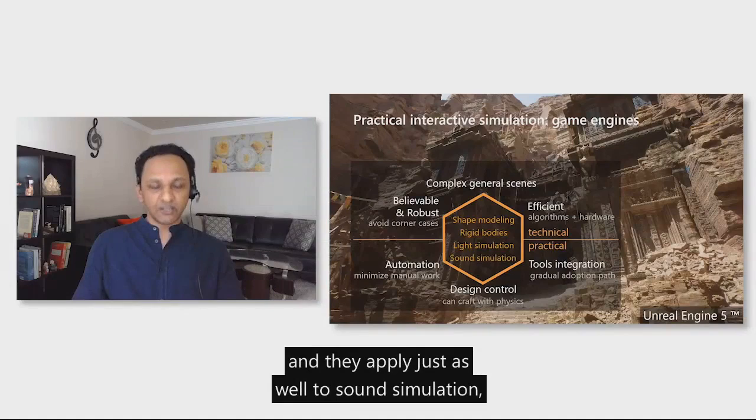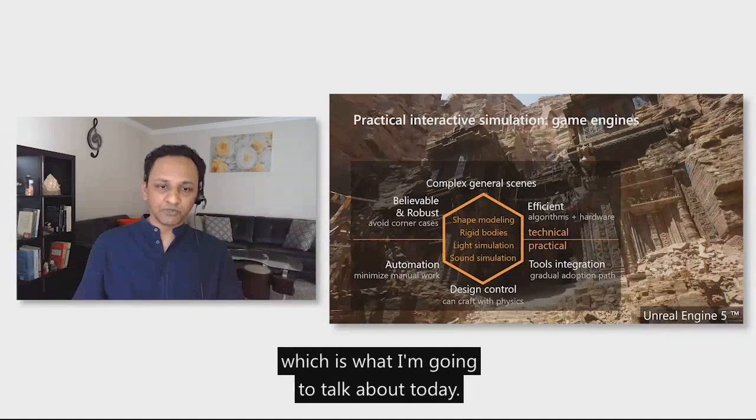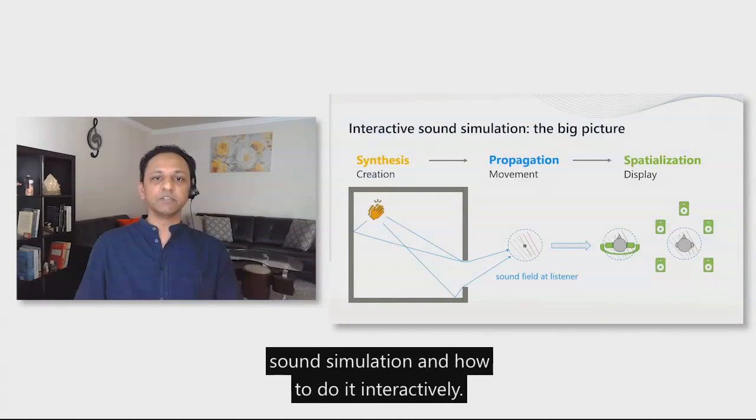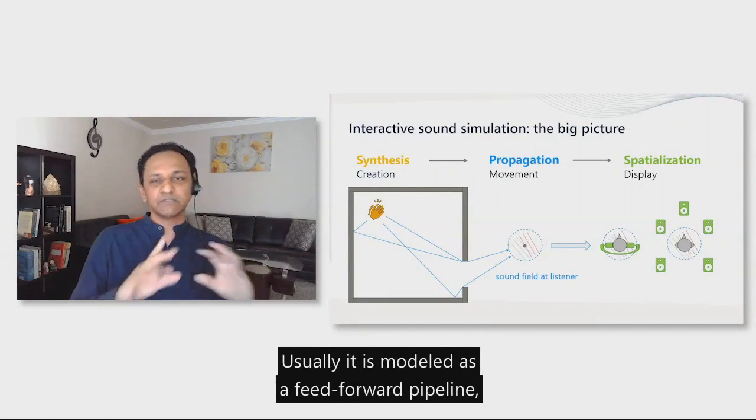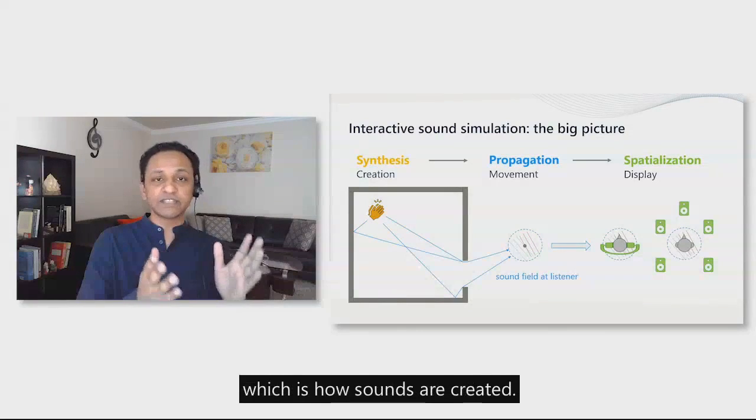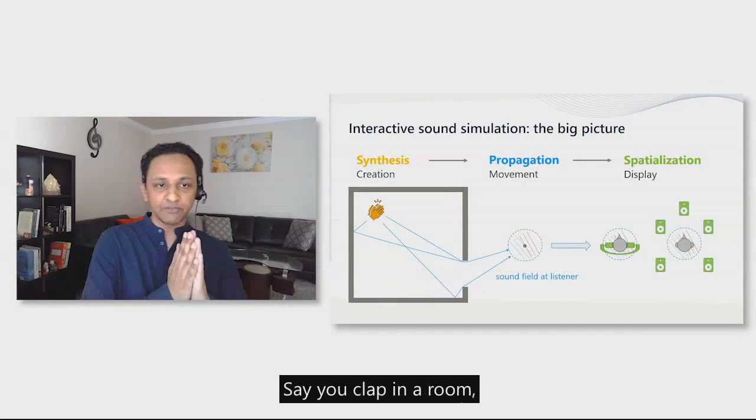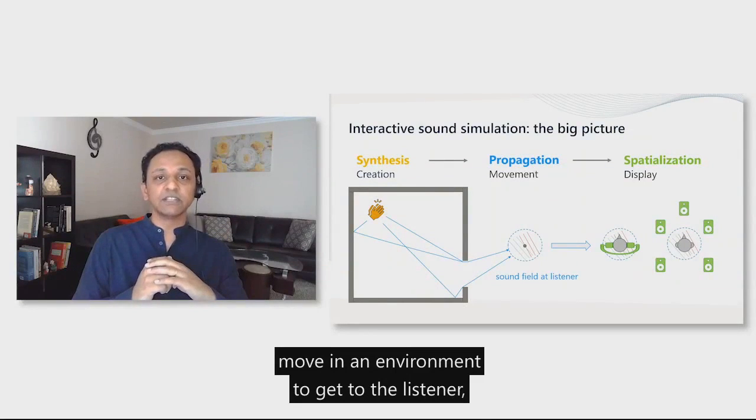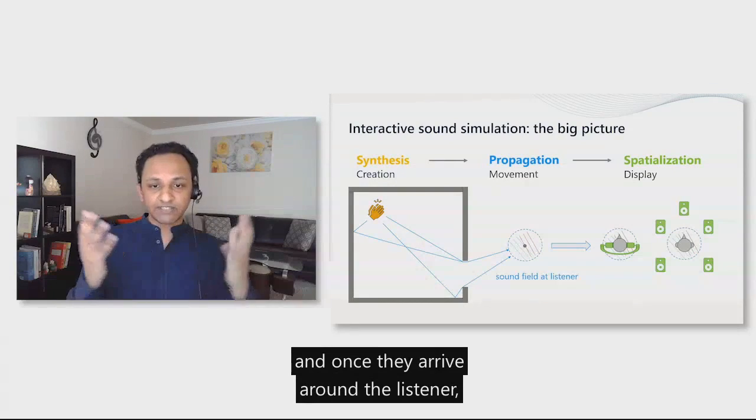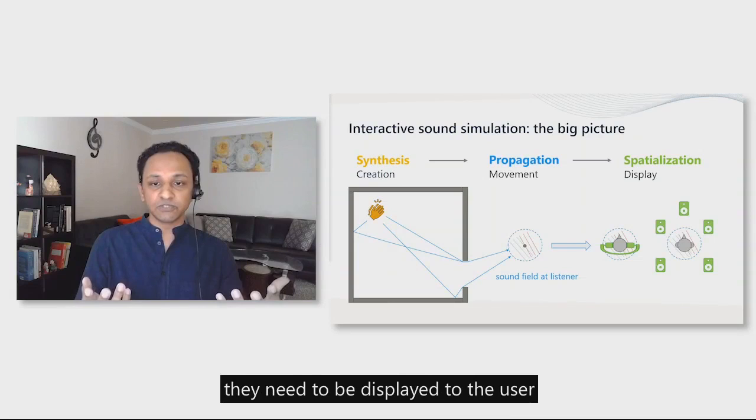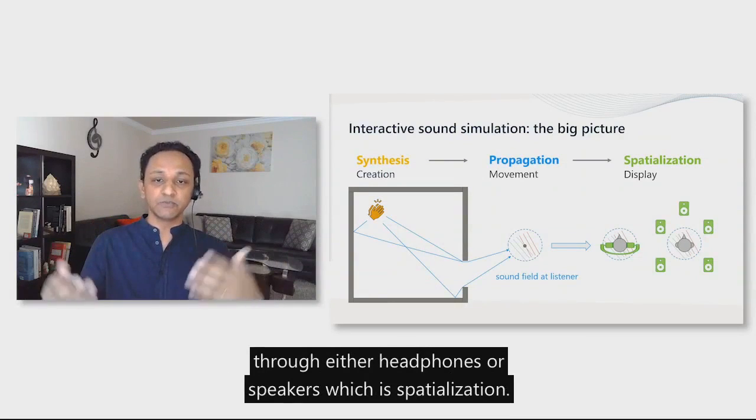So all these six considerations go into any kind of interactive simulation. They apply just as well to sound simulation, which is what I'm going to talk about today. Here's the big picture of sound simulation and how to do it interactively. Usually it is modeled as a feed forward pipeline with three components. There's sound synthesis, which is how sounds are created. Say you clap in a room. Then sounds propagate or move in an environment to get to the listener. That is sound propagation. Once they arrive around the listener, they need to be displayed to the user through either headphones or speakers, which is spatialization.